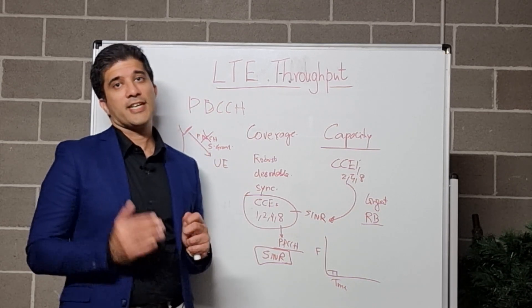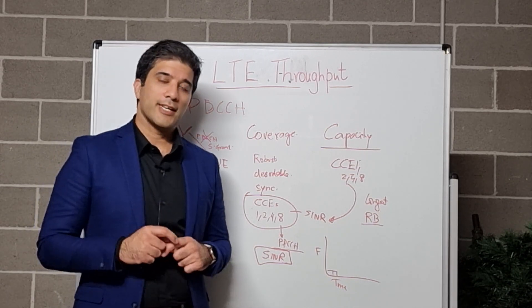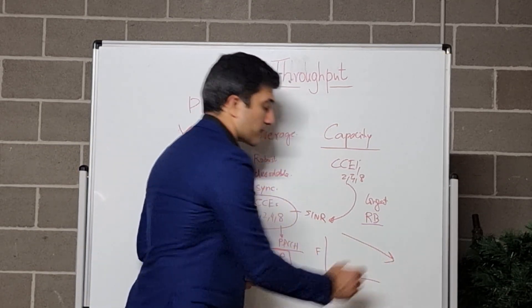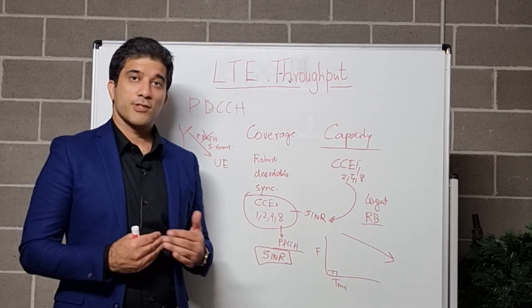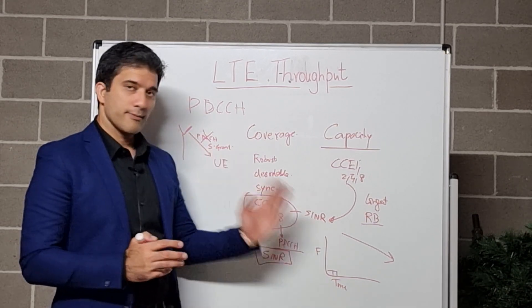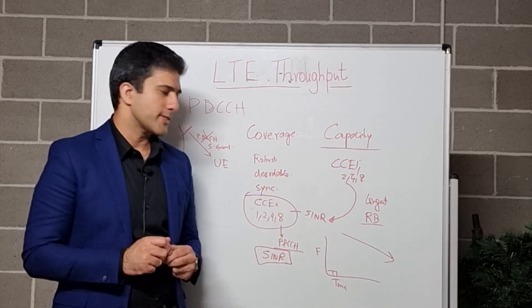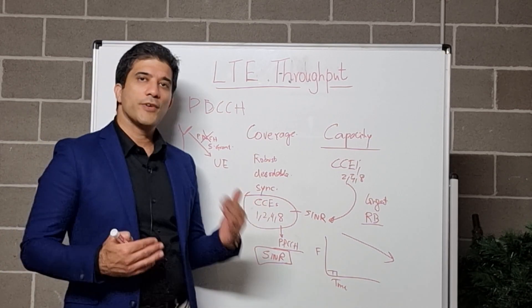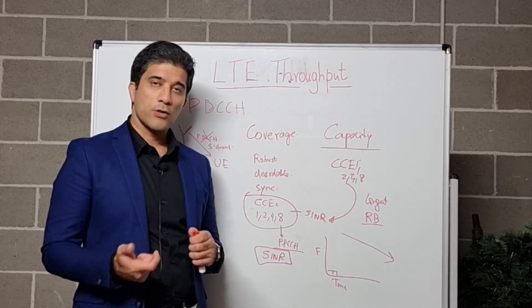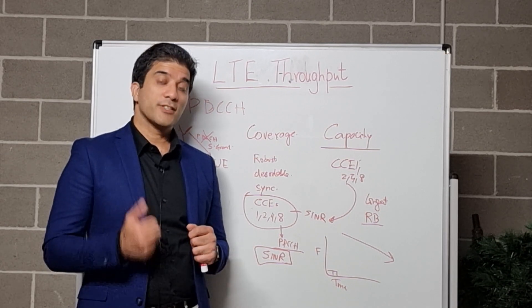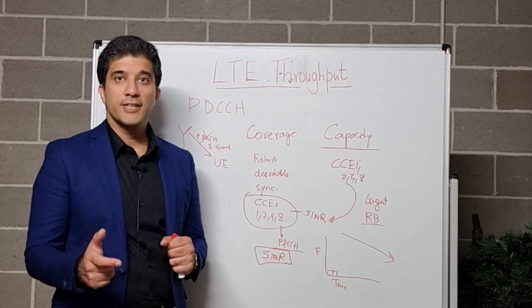In that scenario you need to tune down your Control Channel Element usage — bring it down from CCE 8 to CCE 4, 2, or 1. That will give you more PDCCH capacity, which results in scheduling grants being sent out to your UE. Once the scheduling grant is received, your UE knows data is coming and throughput recovers. These are tested scenarios. In summary, PDCCH plays a very important role in generating traffic and improving throughput from your eNodeB, beyond just resource block congestion and radio conditions.